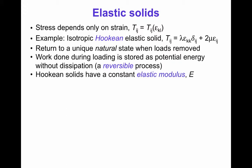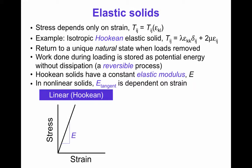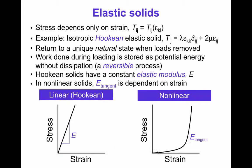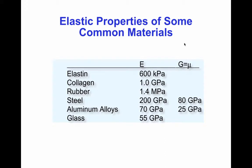Hookean solids have a constant elastic modulus E, whereas for non-linear, non-Hookean solids, the slope of the stress-strain relation is not constant and depends on the strain. A linear Hookean elastic solid has a constant slope of its stress-strain relation, while a non-linear, non-Hookean solid has a non-linear stress-strain relation where the tangent modulus E_tangent changes as a function of strain. Some common materials approximated as linearly elastic and frequently isotropic are listed with their Young's moduli and, in some cases, shear moduli G.